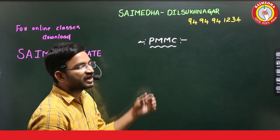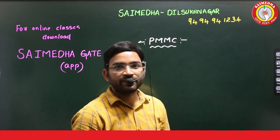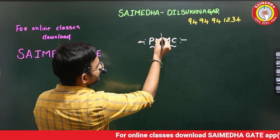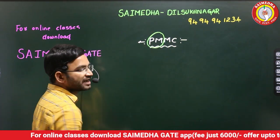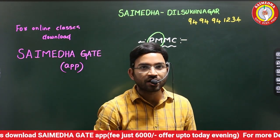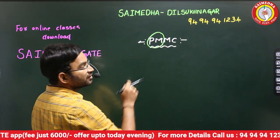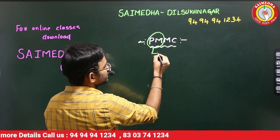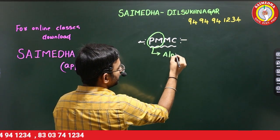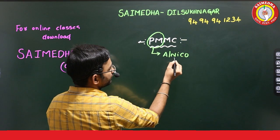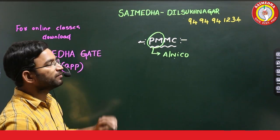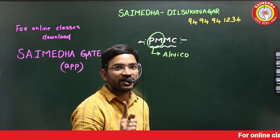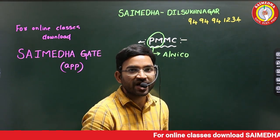First one: Permanent Magnet Moving Coil is a PMMC instrument. Here, the major component is a Permanent Magnet. We use the Permanent Magnet to provide the type of damping.